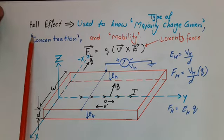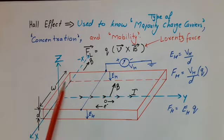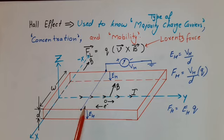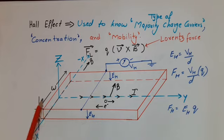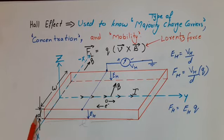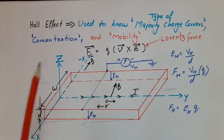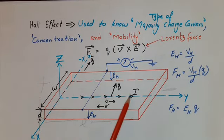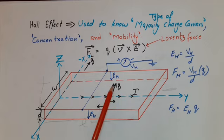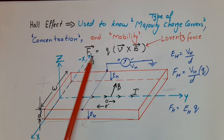The main advantage of the Hall effect is that by using this effect we can find whether a semiconductor is P-type or N-type. To perform this experiment, we take a semiconductor material in the form of a cuboid, whose length is L, width is W, and height or depth is D. We apply a battery across the length of the semiconductor, with one side connected to the positive terminal and the other to the negative, so current flows along the length. We then apply a magnetic field along the width of the semiconductor, perpendicular to the direction of current.